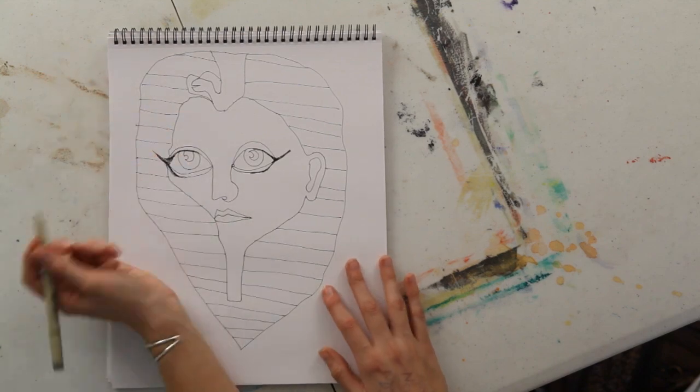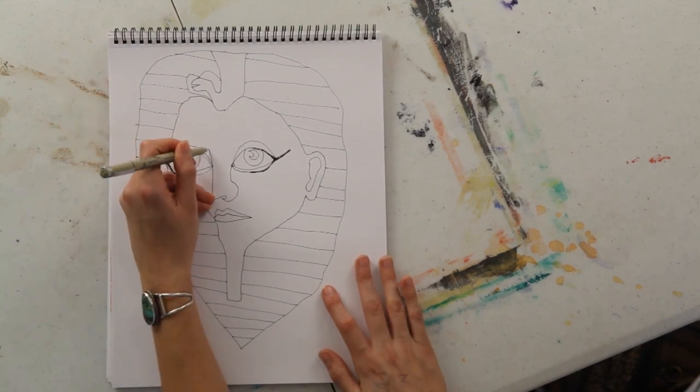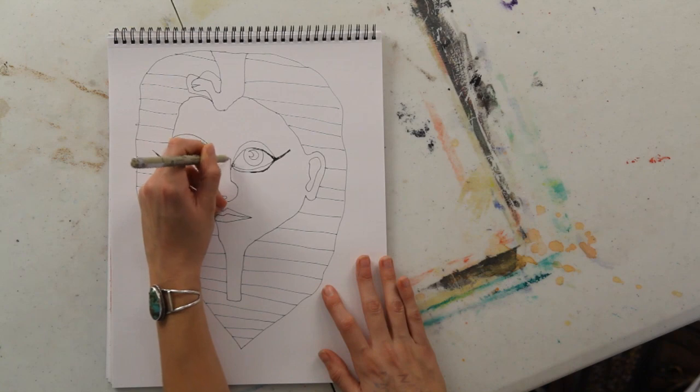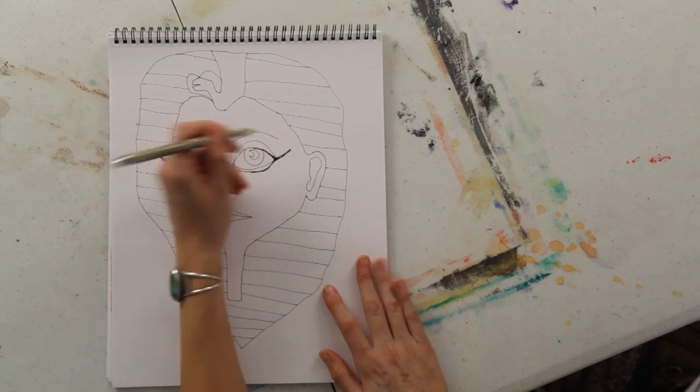And last I'm going to add some eyebrows. Now you can use any colors you want to color in your mask. My name is Abeth and I just showed you how to draw an Egyptian mask.